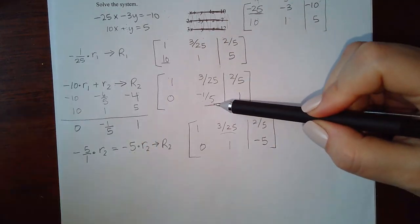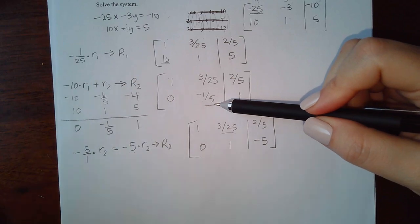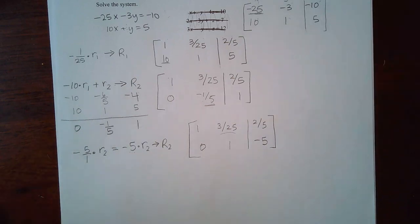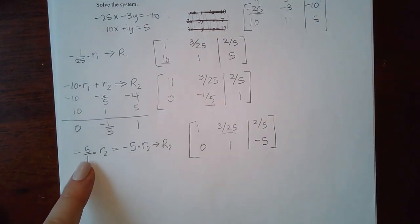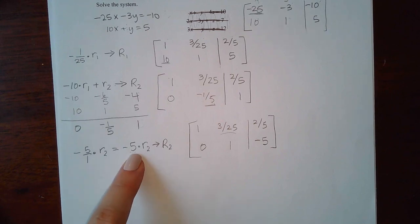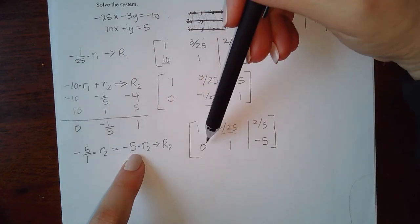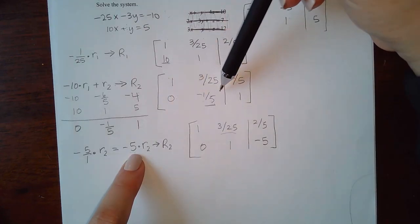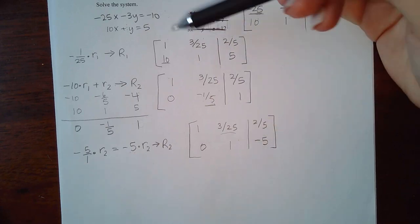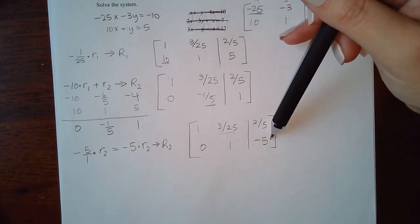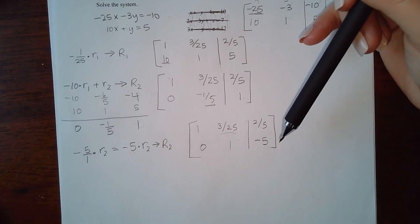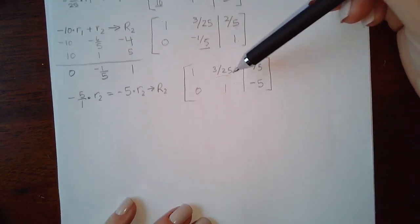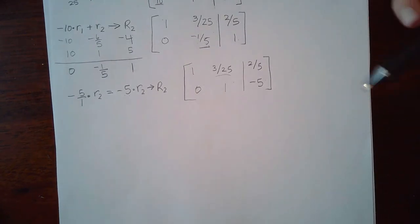Now I need to change this entry into a 1. We multiply by the reciprocal — the reciprocal of -1/5 is -5, so I multiplied by -5. That gives: 0 × (-5) = 0; (-1/5) × (-5) = 1; and 1 × (-5) = -5. So the new row 2 is [0, 1, -5].